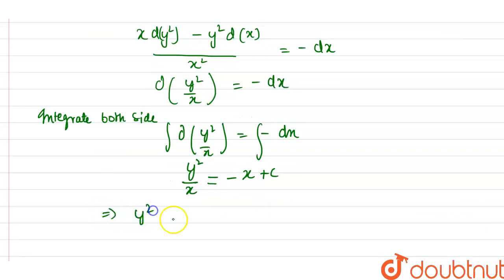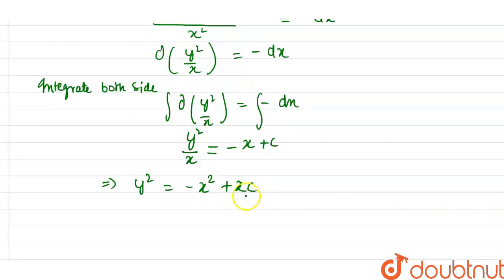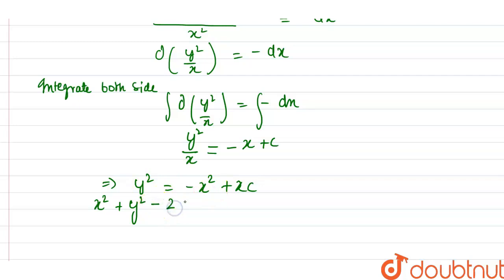This implies y² = -x² + xc, where c is a constant. Rearranging by taking x² to the other side: x² + y² - 2cx = 0. This is the orthogonal trajectory equation.